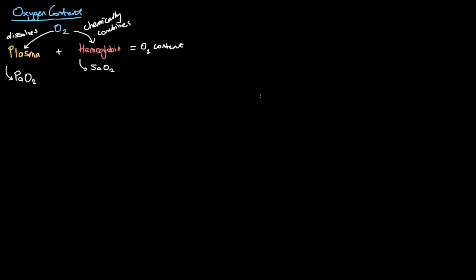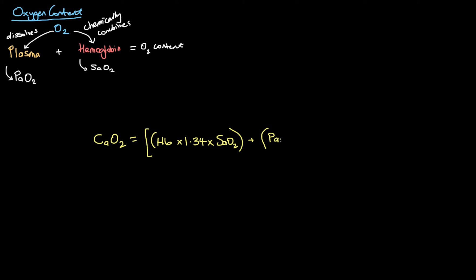Using these two things, we can build a formula to calculate our arterial oxygen content, expressed as CaO2. So the CaO2 — arterial oxygen content — is equal to: hemoglobin times 1.34 times arterial oxygen saturation, plus PaO2 times 0.003.